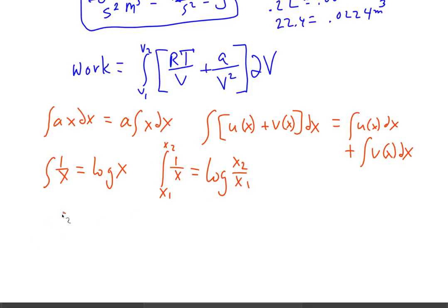Another one that we might need here, we will need here, is 1 over x squared dx. That one is equal to the integral of x to the minus 2. That is equal to, that integral is minus x to the minus 1, which is the same as minus 1 over x.